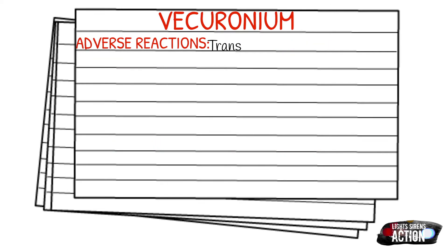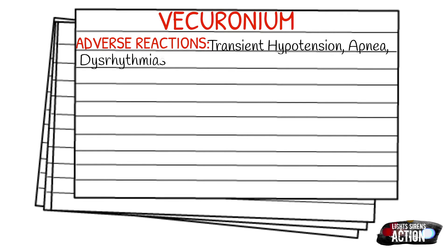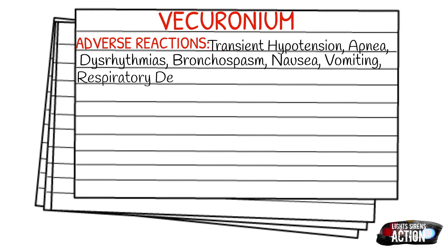Some adverse reactions of Vecuronium can include transient hypotension, apnea, dysrhythmias, bronchospasms, nausea and vomiting, respiratory depression, PVCs, and tachycardia or bradycardia.